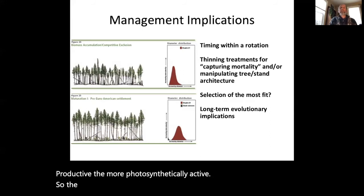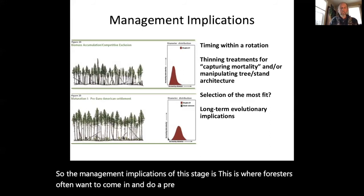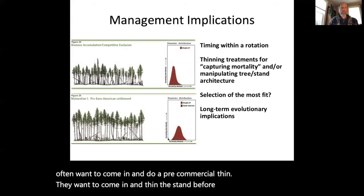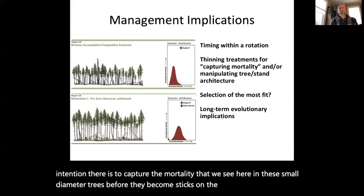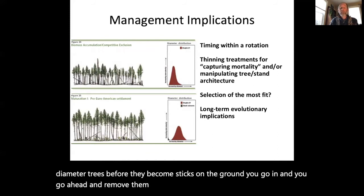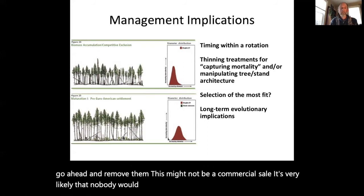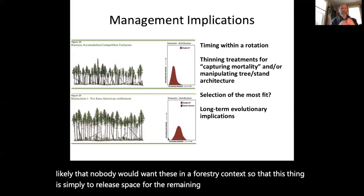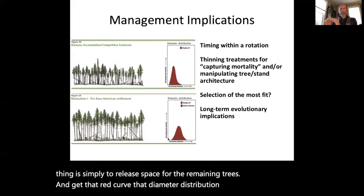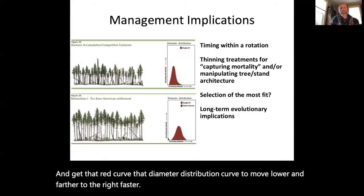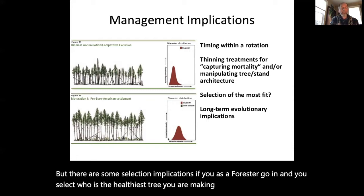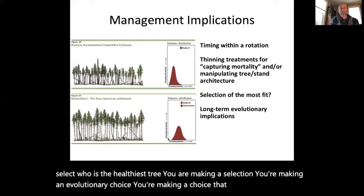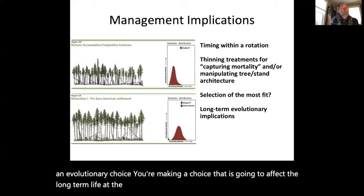The management implication of this stage is that this is where foresters often want to come in and do a pre-commercial thin. They want to thin the stand before this mortality occurs in order to capture the mortality we see in the small diameter trees before they become sticks on the ground. This might not be a commercial sale — it's very likely nobody would want these trees in a forestry context. This thinning is simply to release space for the remaining trees and get the diameter distribution curve to move lower and farther to the right faster. However, there are selection implications: as a forester selecting which trees are healthiest, you are making an evolutionary choice that will affect the long-term life of the stand.